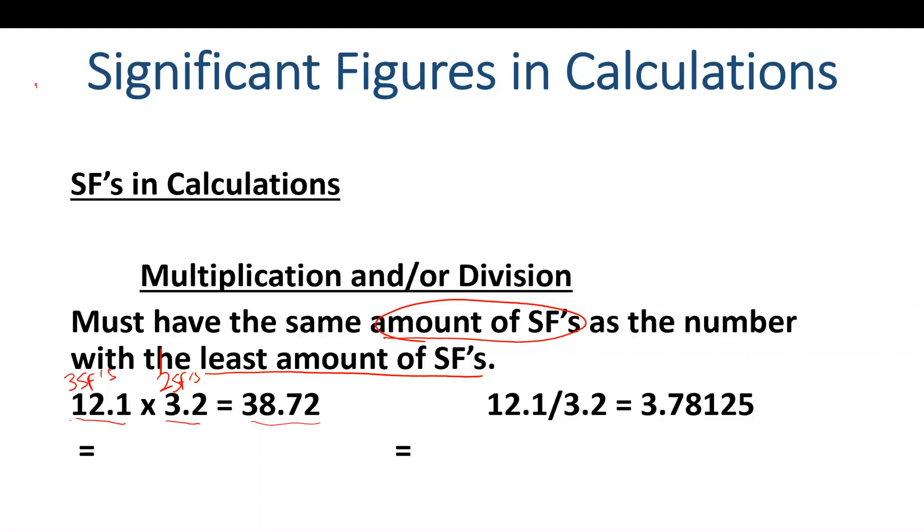So how do we determine the amount of sig figs my final answer should have? It's pretty easy. I look at the two numbers, 12.1 and 3.2, and determine which has the least amount of sig figs. 3.2 has two sig figs, so my final answer should have two sig figs, going to the ones place. I look to the right of the ones place—the tenths place—and see it's a seven, so I round up. My final answer is 39.